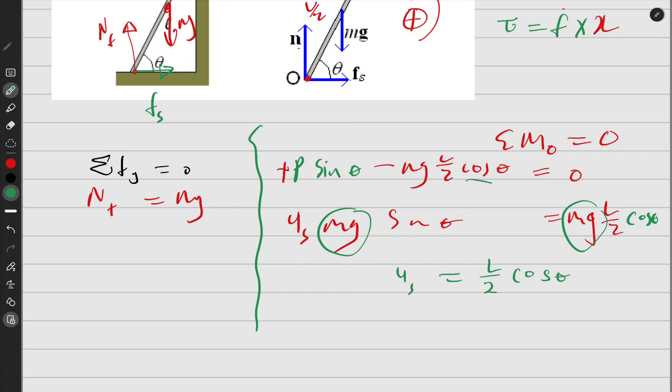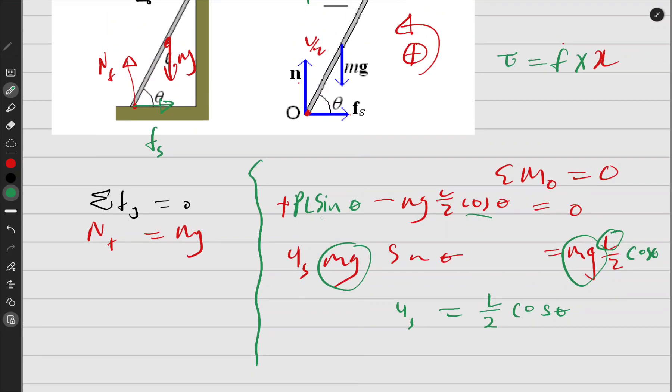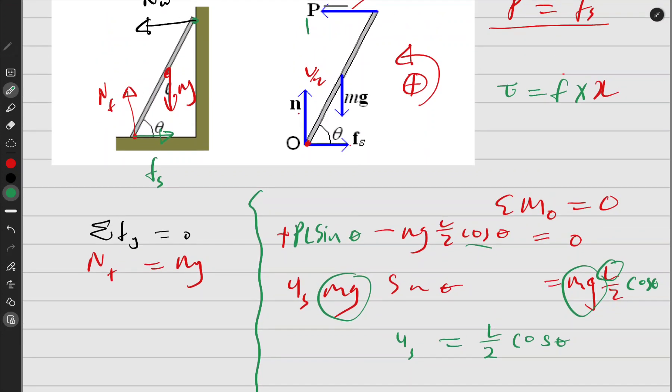And another mistake that I spot—there should be an ℓ here. Okay, and that ℓ will help me get rid of this ℓ. I'll have one over two. Okay, because this is an arm. So we don't have this ℓ here; we have one instead. Okay, so here which is μ_s sine theta.